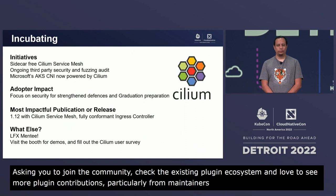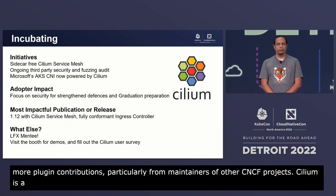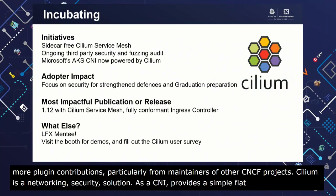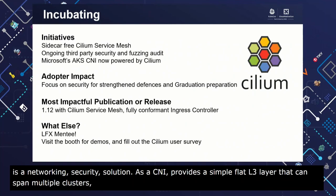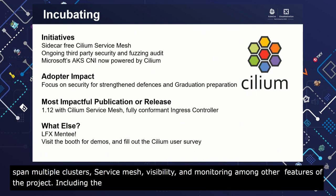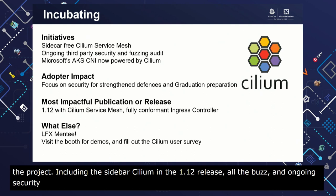Cilium is a networking, observability, and security solution built on eBPF. As a CNI, it provides a simple flat L3 network layer that can span multiple clusters, ingress and egress gateways, service mesh visibility and monitoring, among many other features. Project initiatives include the sidecarless Cilium service mesh and their 1.12 release — which is all the buzz — an ongoing third-party security and fuzzing audit, and the project is thrilled to announce that Microsoft AKS CNI is now powered by Cilium.